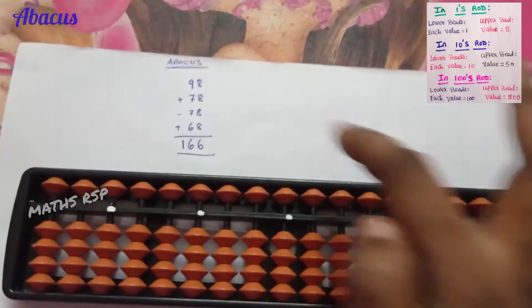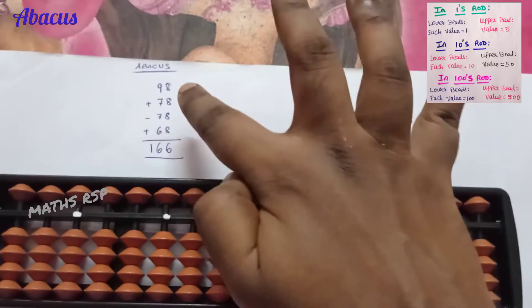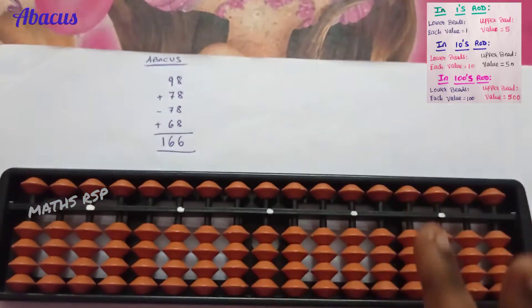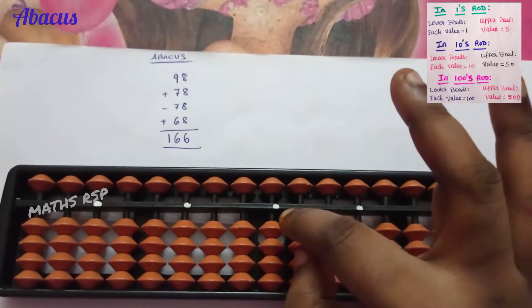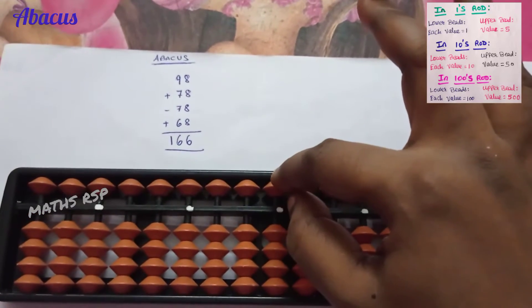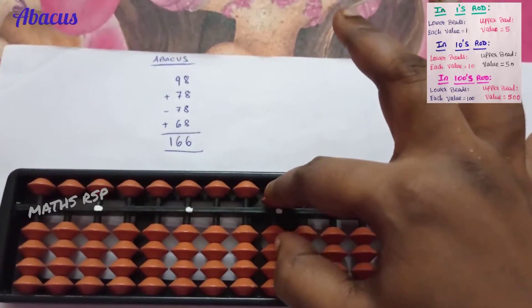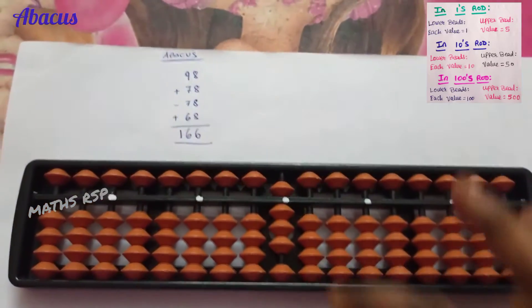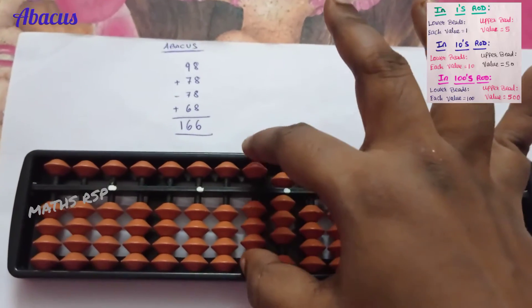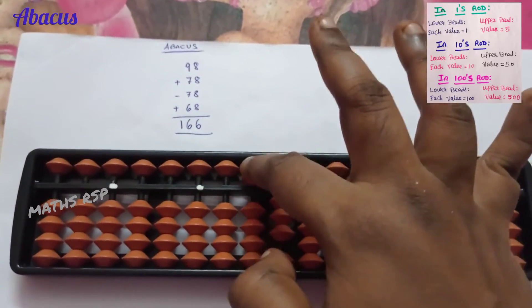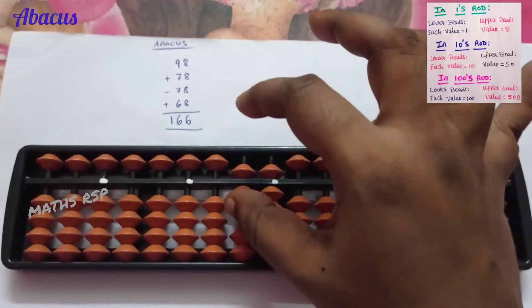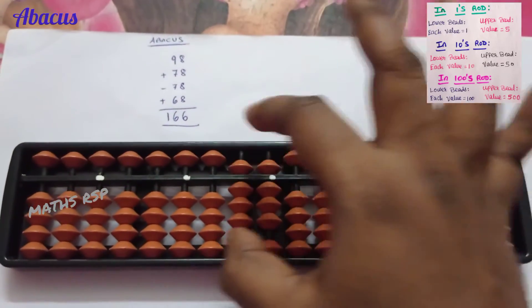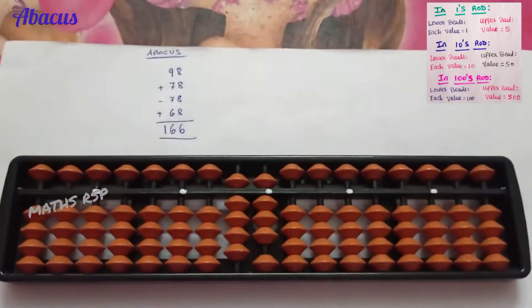Now let's see the problem. The first row is 98 — eight is in the one's place, nine is in the ten's place. In the one's strot, for eight we start from the upper bead which is five, then six, seven, eight. In the ten's strot, nine beads are added: fifty, sixty, seventy, eighty, ninety. So 98 is added.